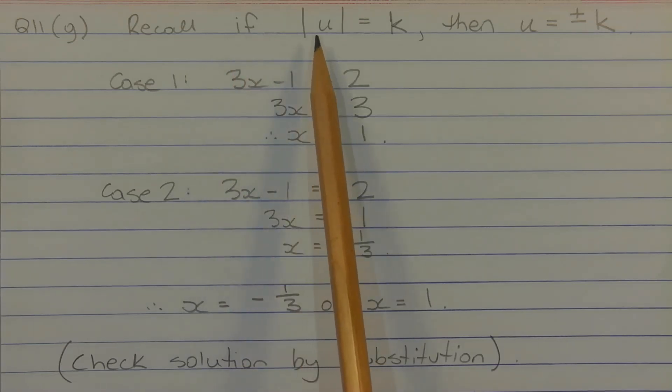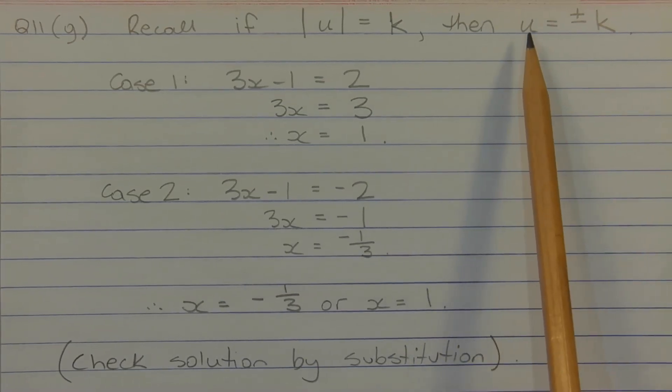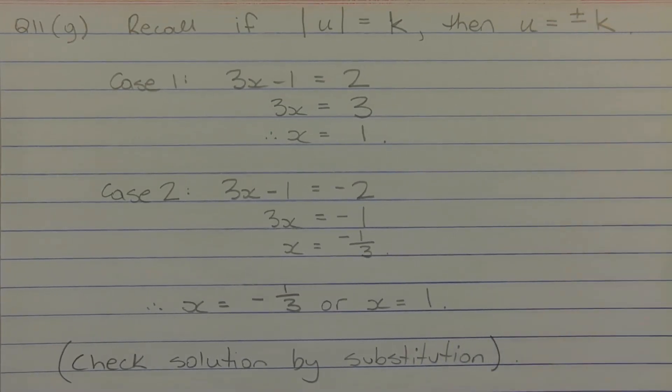Recall that if the absolute value of u equals k, where k is a non-negative constant, then u equals plus or minus k.